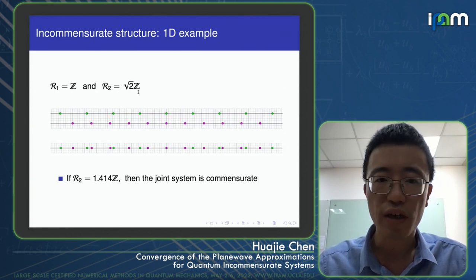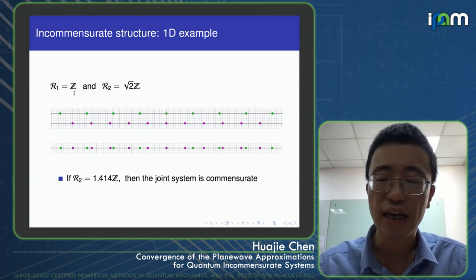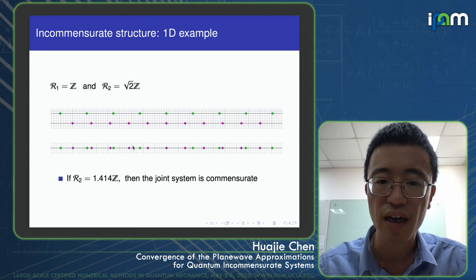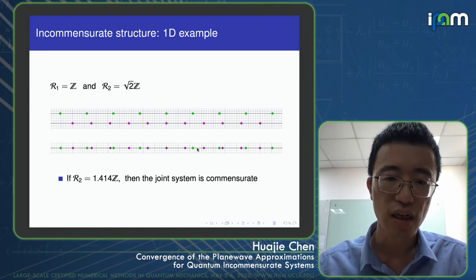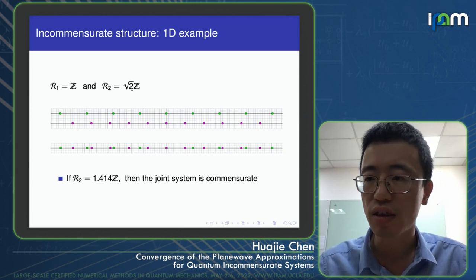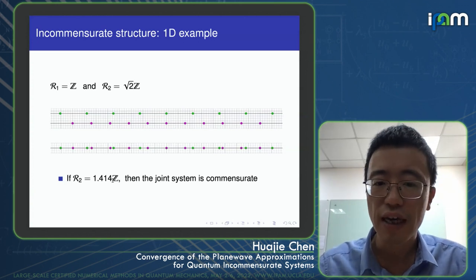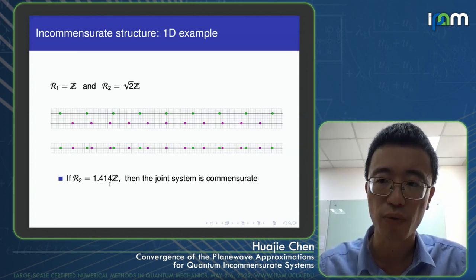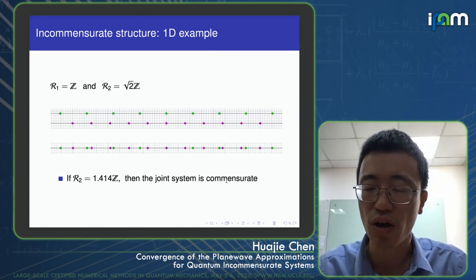As a one-dimensional example, we have two periodic chains: one with lattice constant 1 and the other with lattice constant √2. Since the lattice constants are rational and irrational, the joint system loses translation invariance — giving a 1D incommensurate system. But if we replace √2 by, say, 1.414, then the joint system is still periodic but with a very large lattice constant of 1,414. That case is called commensurate.